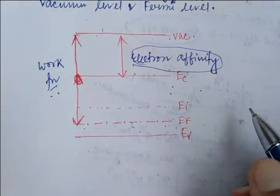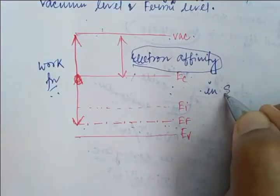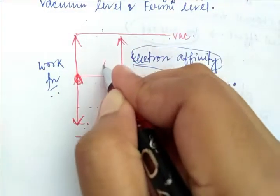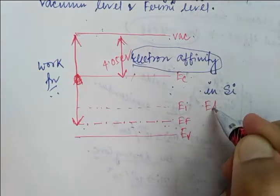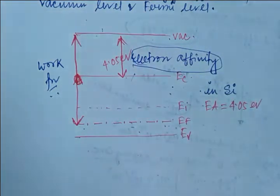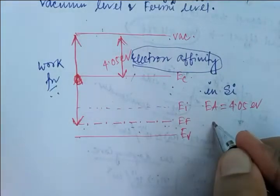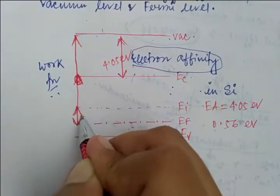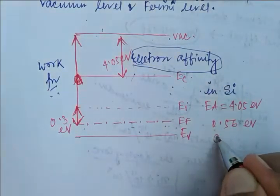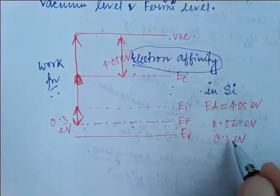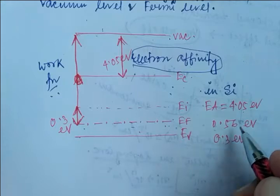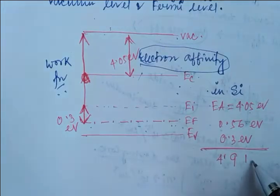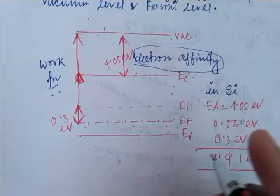In silicon, please note: the electron affinity is 4.05 electron volts. Half of the band gap is 0.56 electron volts, and the bulk potential due to doping concentration is 0.3 electron volts. Adding these three values: 4.05 + 0.56 + 0.3 = 4.91 electron volts, which is the total work function for p-type silicon.